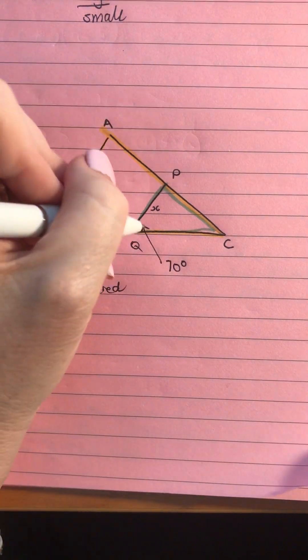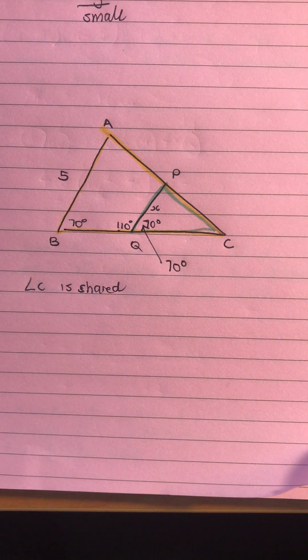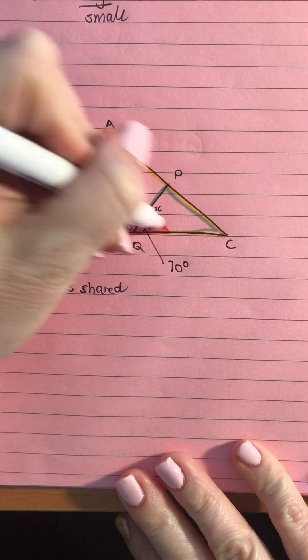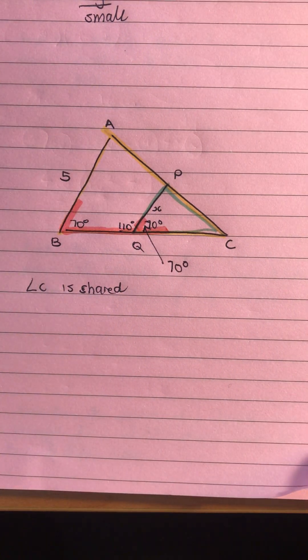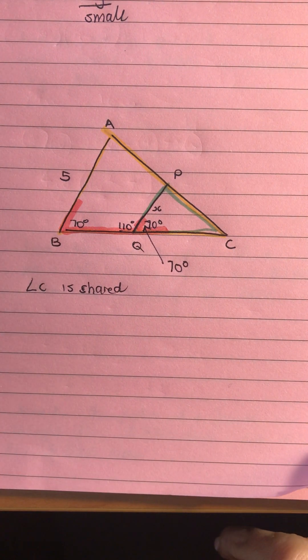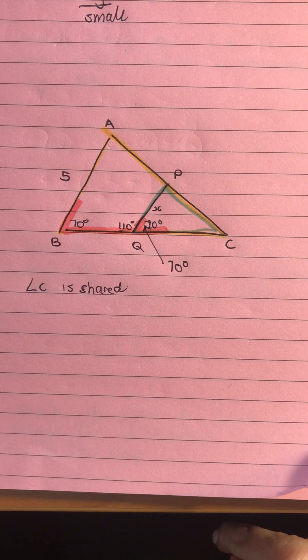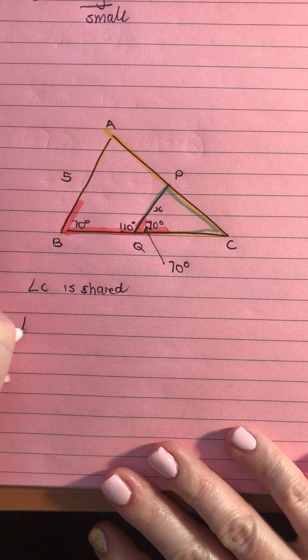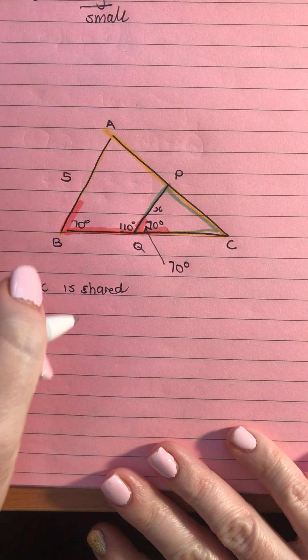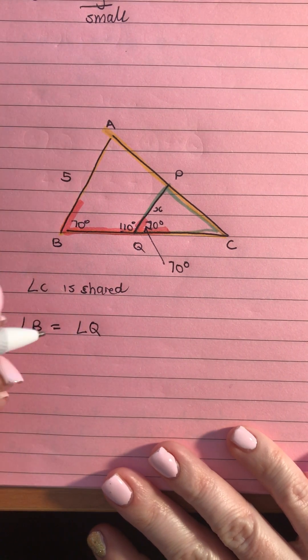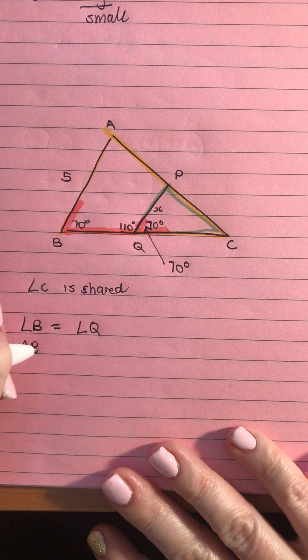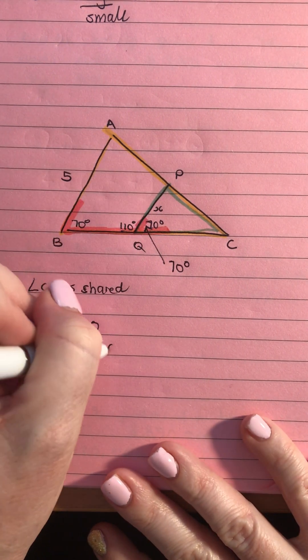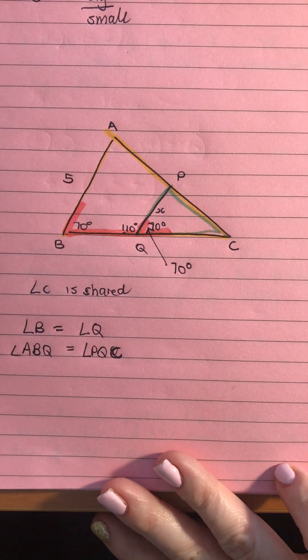Now that we've got 70 degrees there we can then because we've got that same angle and a straight line we can use that it's like an F rule there. That may come in handy to find any other angles but it's interesting that we've got that. So we now have that angle B is equal to angle Q or you may want to be more specific when you do angles and go angle ABQ is equal to angle PQC there.